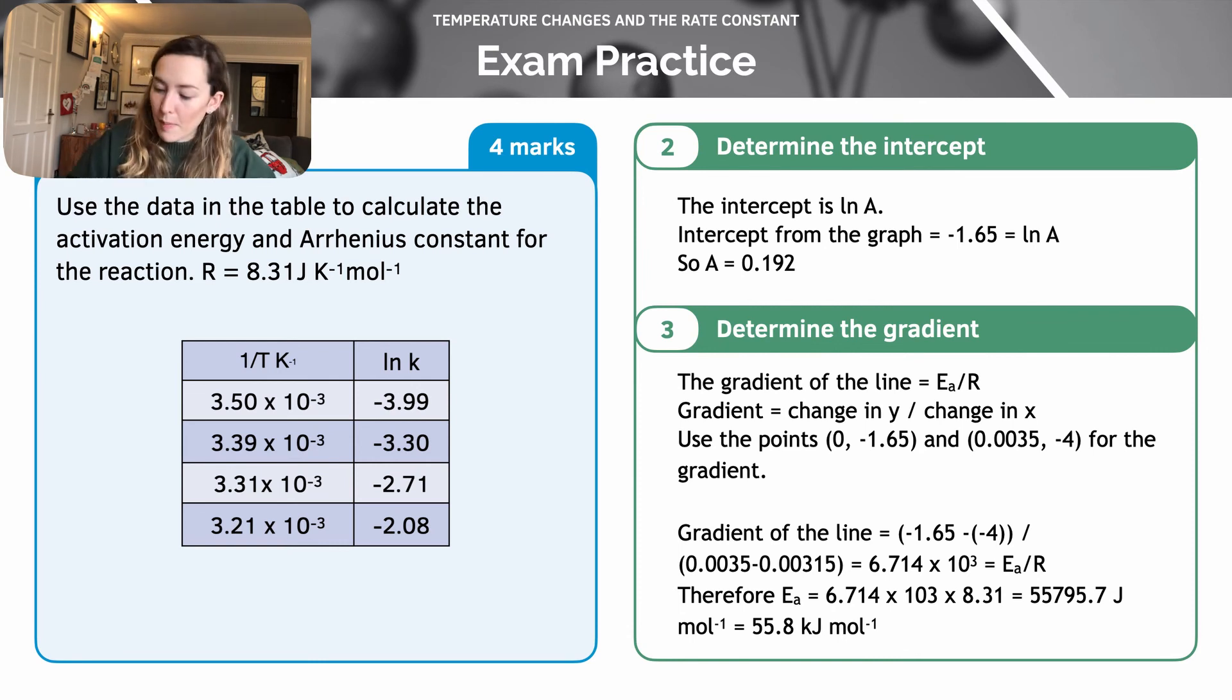The second part, we need to remember that the gradient of the line is Ea, the activation energy, over r. So let's work out the gradient. We know the gradient is the change in y, the rise, over the change in x, the run. So along the stairs up the corridor, but it's rise over run, always. It's a really good phrase to remember.